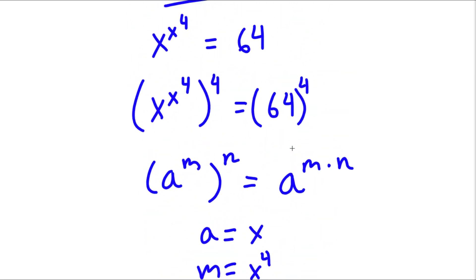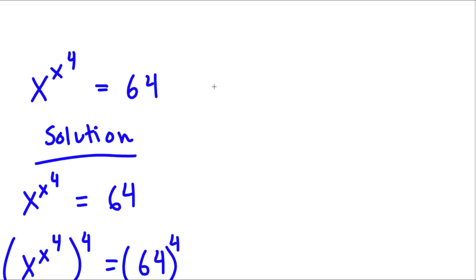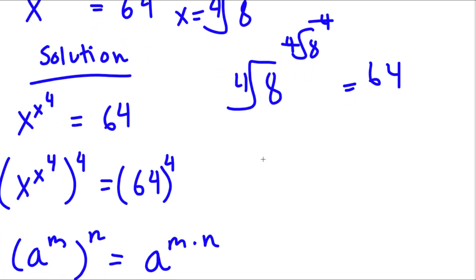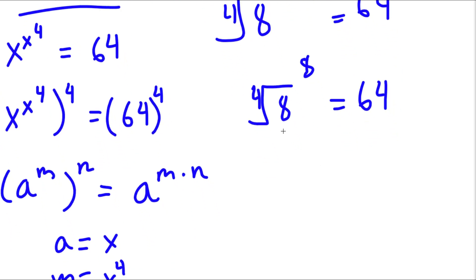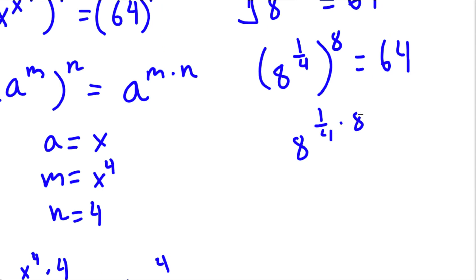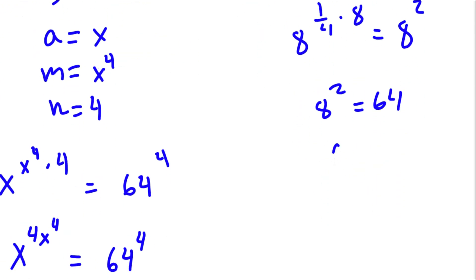Now to check our solution, our original equation was x to the power of x to the power of 4 is equal to 64, and x is equal to the 4th root of 8. So if I plug in the 4th root of 8, I get the 4th root of 8 to the power of the 4th root of 8 to the power of 4, is equal to 64. Now the 4th root of 8 to the power of 4 — these two cancel out. So I have the 4th root of 8 to the power of 8 is equal to 64. The 4th root of 8 is the same as 8 to the power of 1 over 4, so I have 8 to the power of 1 over 4 times 8, which is 8 to the power of 2. So 8 to the power of 2 is 64, and 64 is equal to 64 — our solution is correct.